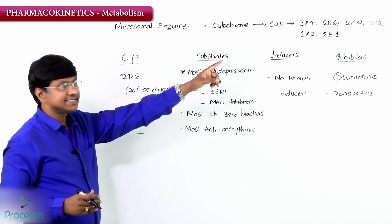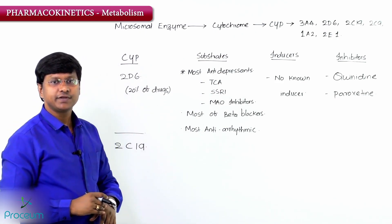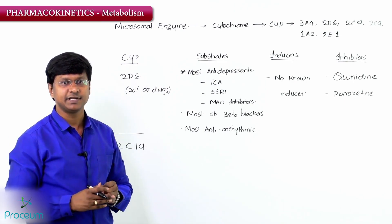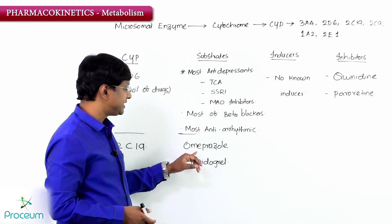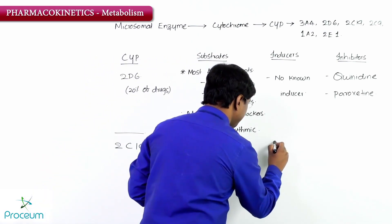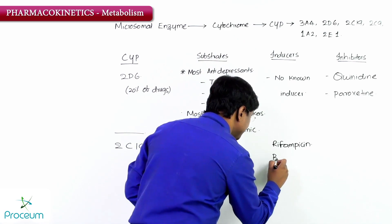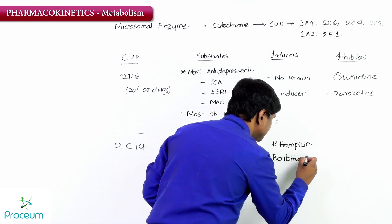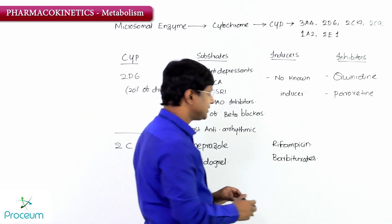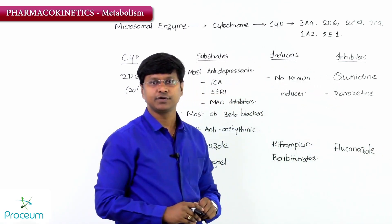Next is CYP2C19. The substrates of CYP2C19 are omeprazole (a proton pump inhibitor) and clopidogrel (an anti-platelet drug). The inducers of CYP2C19 include rifampin and barbiturates. The inhibitor of CYP2C19 is fluconazole, an antifungal drug.